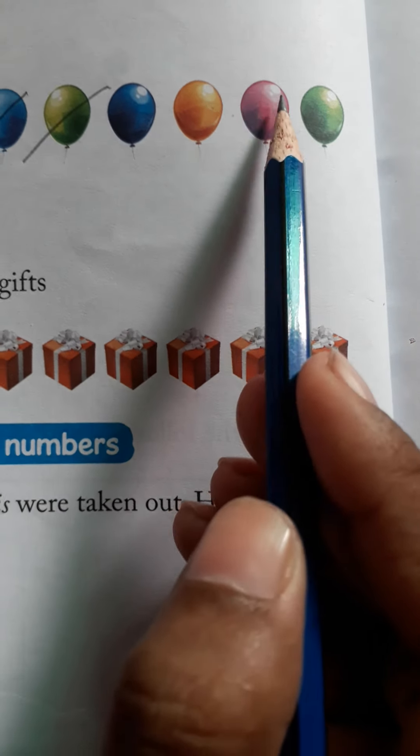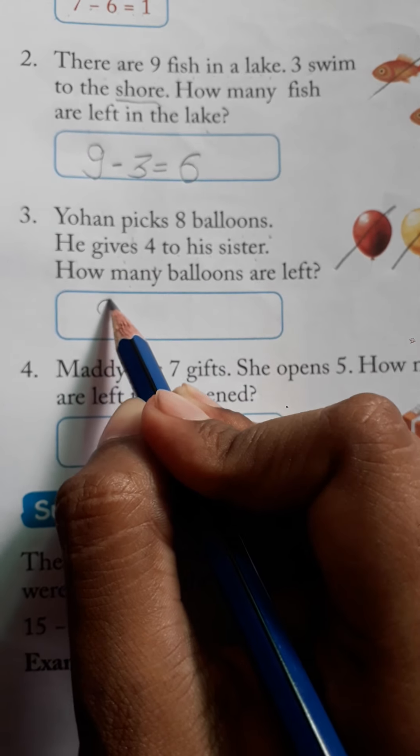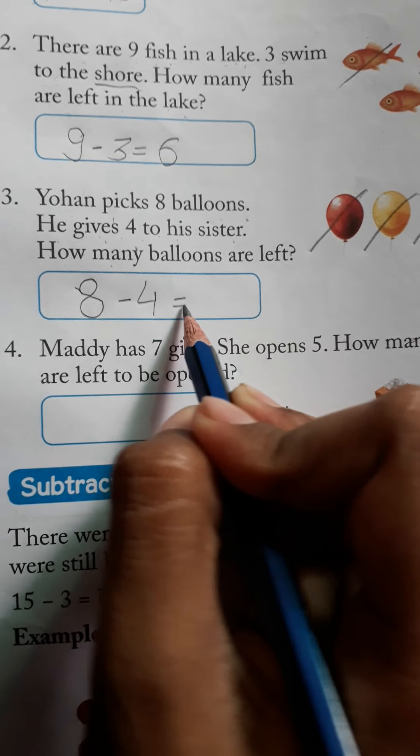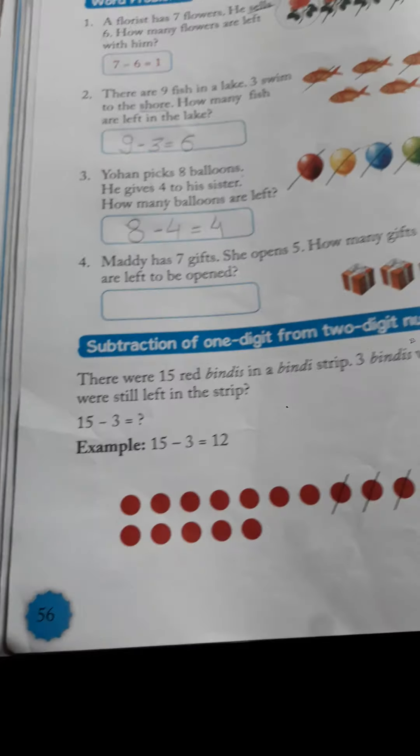How many balloons are left? Let's see: 1, 2, 3, 4. So what will come here? We have a total of 8 balloons. Johan gave 4 balloons to his sister, so we have 4 balloons left.